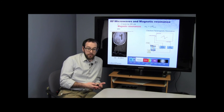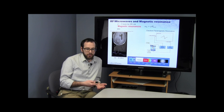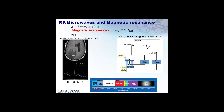Going to a lower energy region still — skipping over the terahertz regime for now — we arrive at the RF and microwave region, the lowest energy region we're discussing today. These very long wavelengths of light couple to very low energy excitations, and one of the more important of those is magnetic resonances. Two examples are magnetic resonance imaging, used in hospitals all over the world, as well as electron paramagnetic resonance, which tells you about the chemical structure of materials.